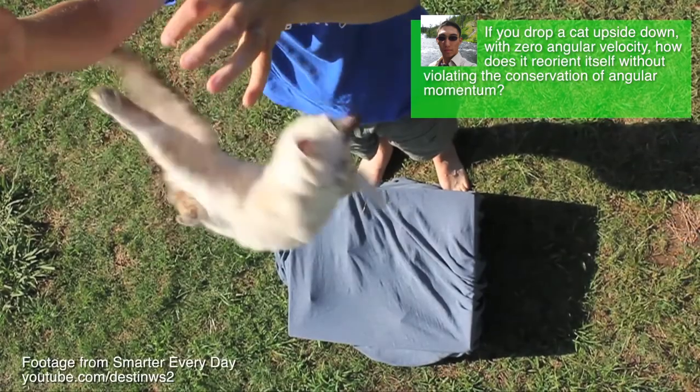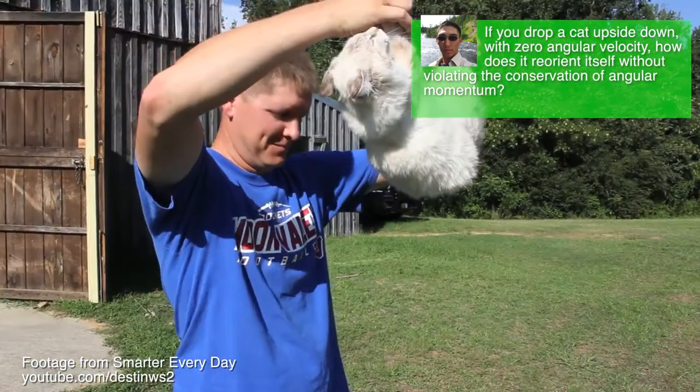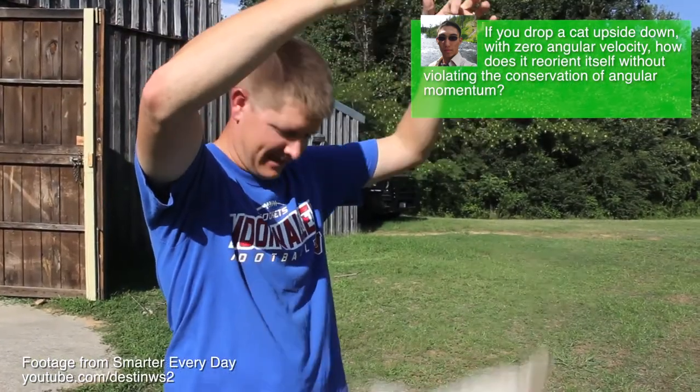If you drop a cat upside down with zero angular velocity, how does it reorient itself without violating the conservation of angular momentum?